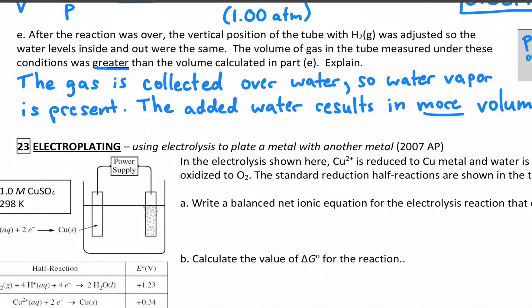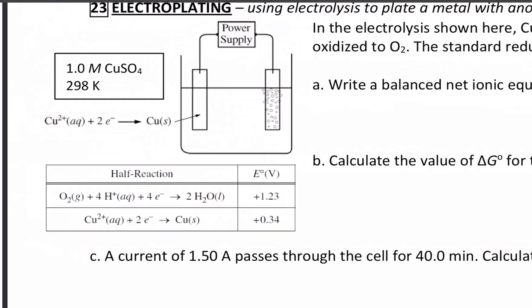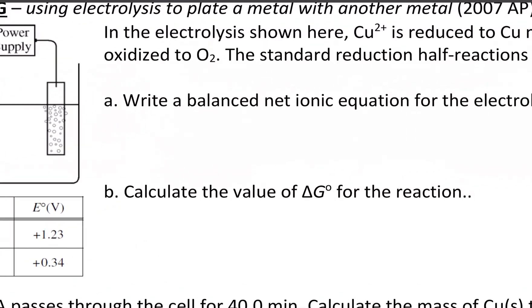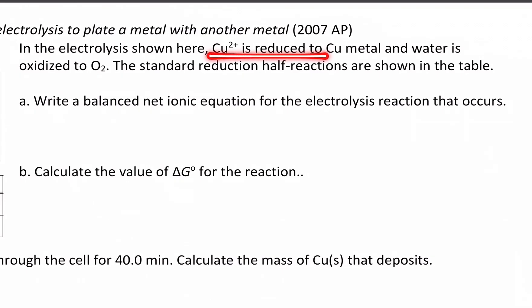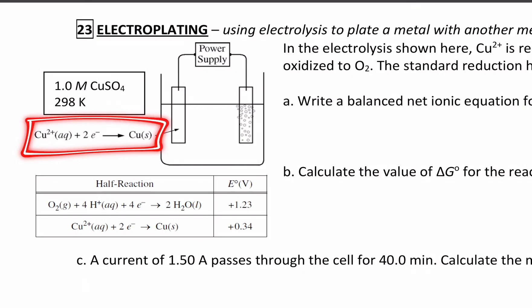Now let's look at another application of electrolysis: electroplating. Sometimes we're not collecting gases but collecting metal. This is how we plate metals onto things to make jewelry or special utensils — take a solution of an ion, force it to be reduced to a metal, and it plates out. In this example, copper ion is getting reduced to copper metal and water is getting oxidized to oxygen gas. A standard reduction potential table is provided.